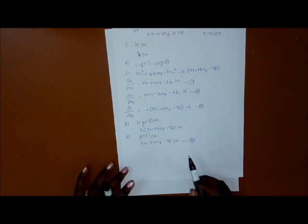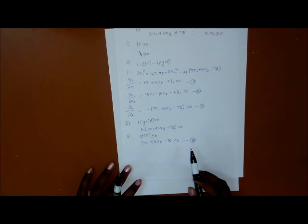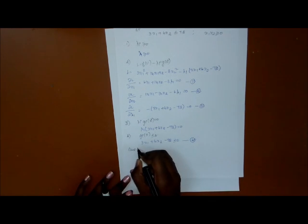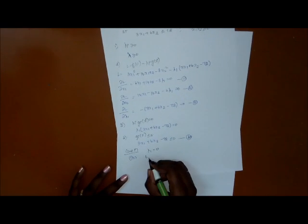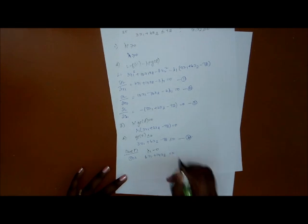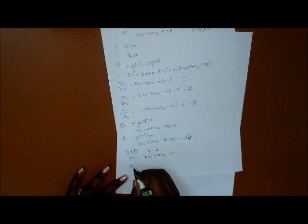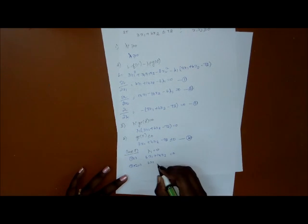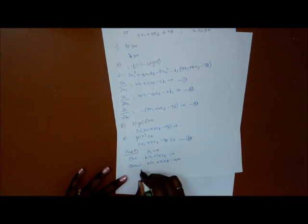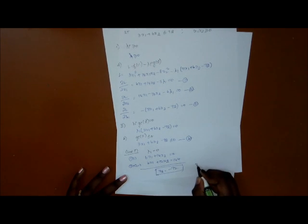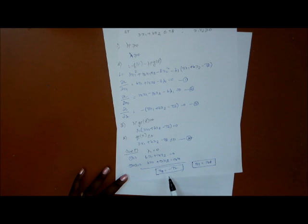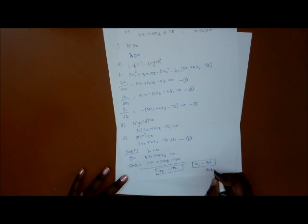We solve two cases: Case 1 where λ₁ = 0 and Case 2 where λ₁ ≠ 0. For Case 1, substituting λ₁ = 0 into equation 1 gives 6x₁ plus 14x₂ = 0. Multiplying equation 3 by 2 gives 6x₁ plus 12x₂ = 144. Solving these, we get x₂ = −72 and x₁ = 168. Since x₂ is negative, this is an infeasible solution.